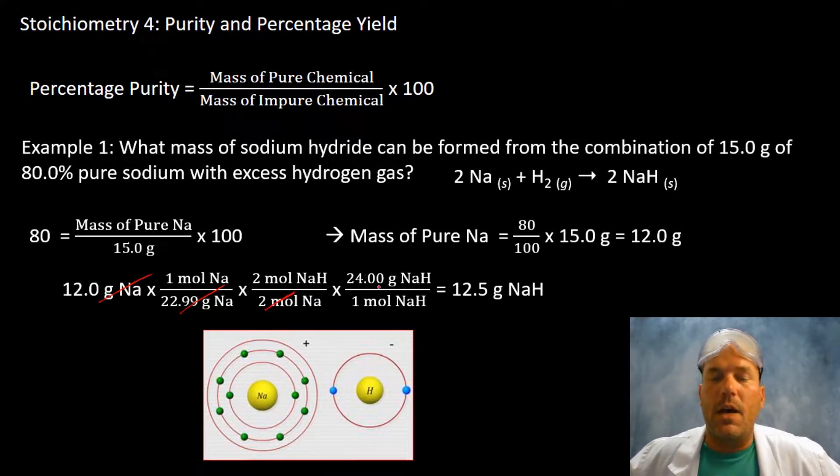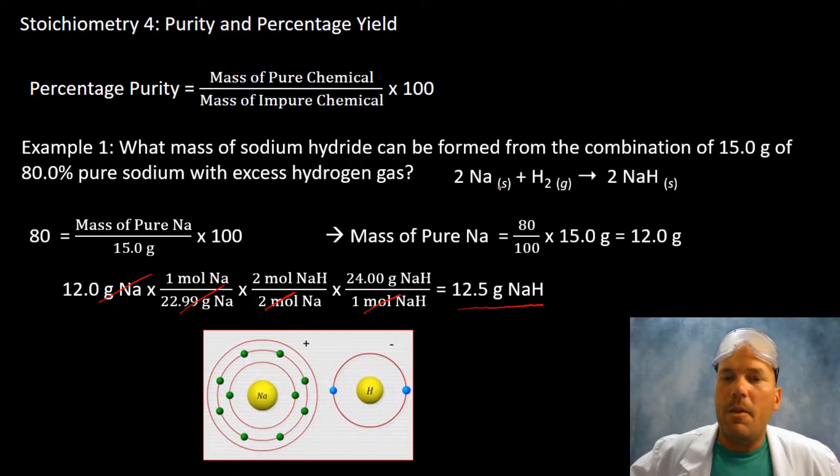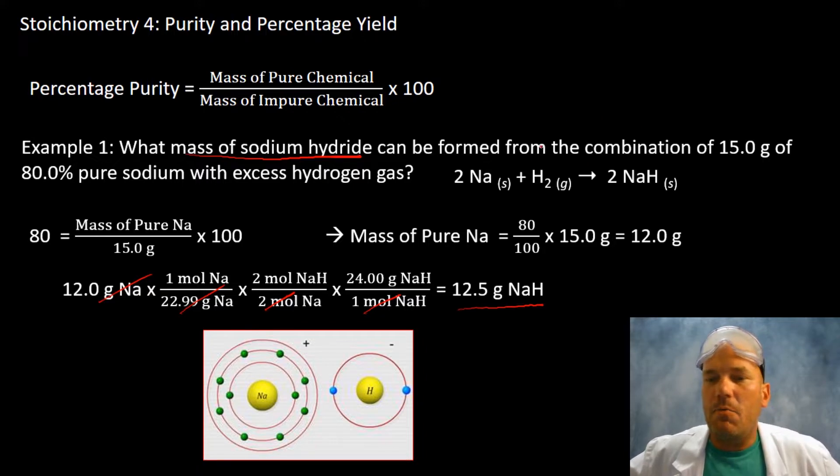Here, all laid out for you: molar mass, molar mass, a two to two stoichiometric molar ratio. Now we're in moles of the metal hydride, and in one mole there are 24 grams. That gives us our answer of 12.5 grams, because that's what we're being asked for, what mass of this.